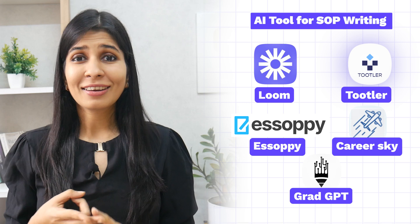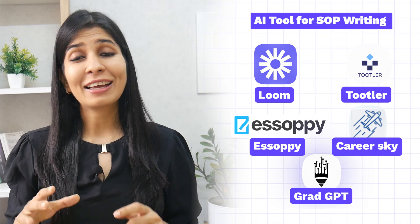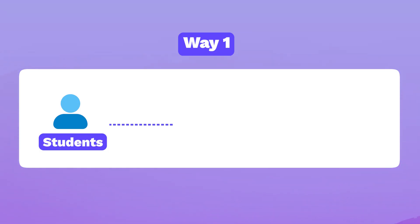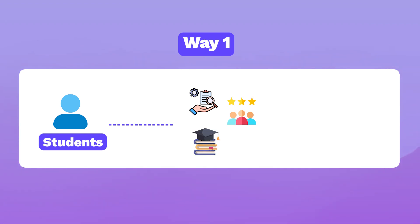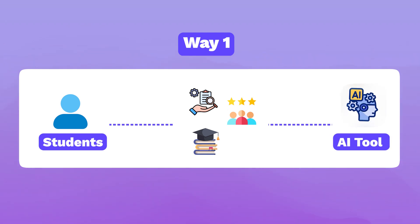When it comes to SOP writing, you can use as basic a tool as ChatGPT. However, there are certain AI tools in the market which have been designed specifically for SOP writing, such as Loom, Tutler, ESOP, Career Sky and GradGPT. There are usually two ways students use these platforms. The first way is where they input key things they have done — for example, research projects, work experiences, and the university and program they are interested to apply to — and then the AI tool generates the entire SOP for them.